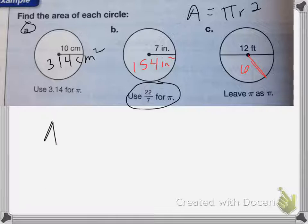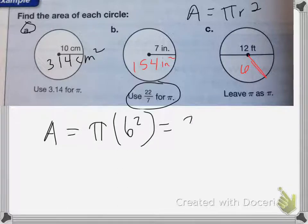So my area is going to equal pi times 6 squared. 6 squared is equal to 36, and since I'm leaving pi as pi,